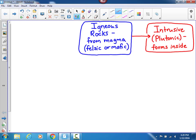Because intrusive rocks form underground, that gives them a specific texture that we call coarse-grained.